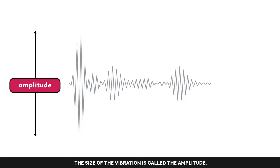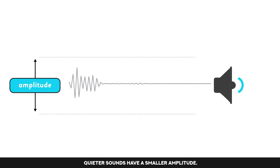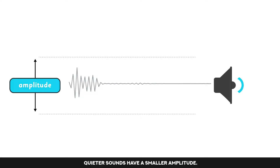The size of the vibration is called the amplitude. The stronger the vibrations, the louder the sound, or the bigger the amplitude. Quieter sounds have a smaller amplitude.